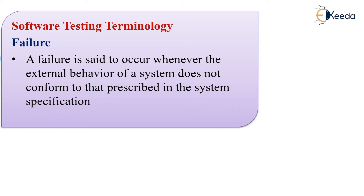Let's study about failure. A failure is said to occur whenever the external behavior of the system does not match or conform to the system specification defined in the documentation. During the requirements phase, all requirements are documented; in the implementation phase, they are coded up; and in the testing phase, the behavior is tested against the specification. If it does not match, then the failure is identified.